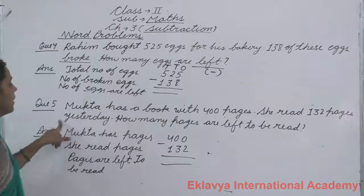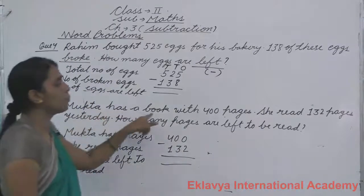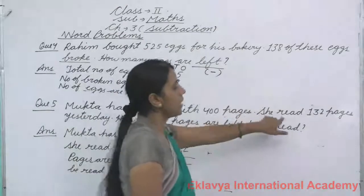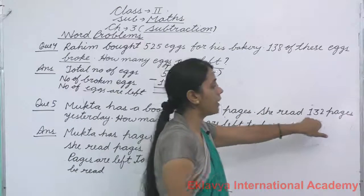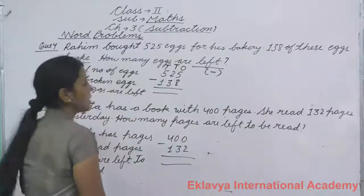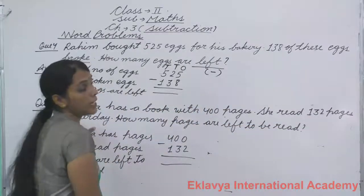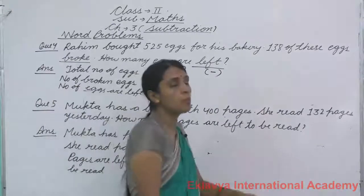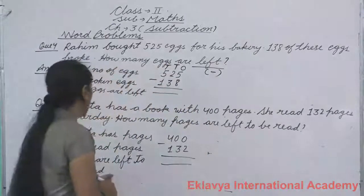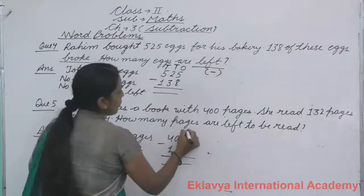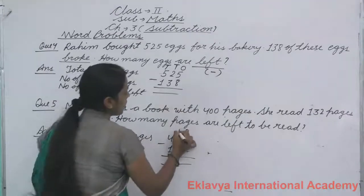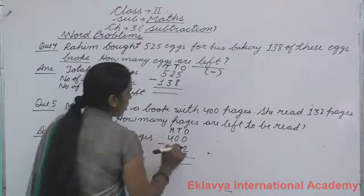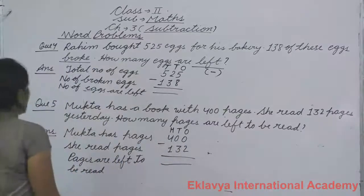We will read again. Mukta has a book with four hundred pages. She reads one hundred thirty-two pages yesterday. How many pages are left to be read? Now we will put ones, tens, and hundreds. Students, you are to solve it yourself.